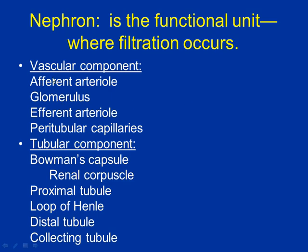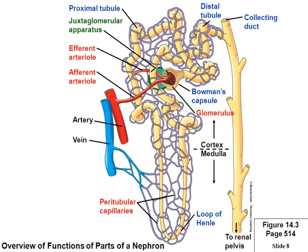The afferent arteriole carries blood into the nephron. The glomerulus is a structure that looks like a ball of yarn — a specialized sprinkler system with tiny pores so things like water, glucose, sodium, potassium, and chloride can filter out. After filtering, the remaining blood leaves through the efferent arteriole. If afferent goes in, efferent comes out.